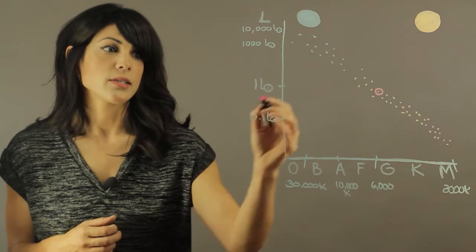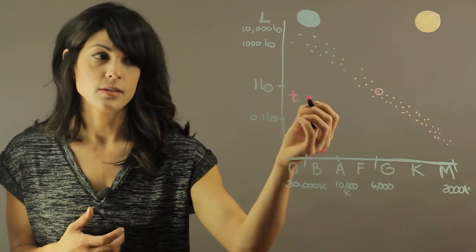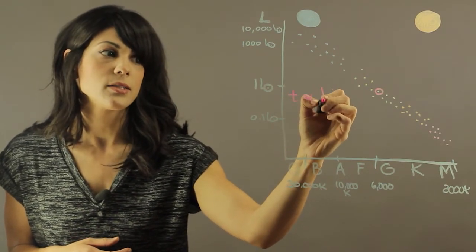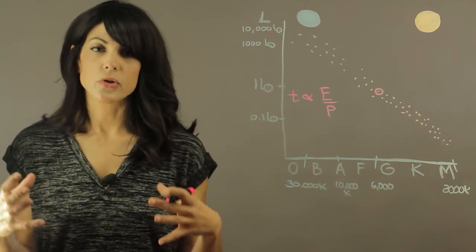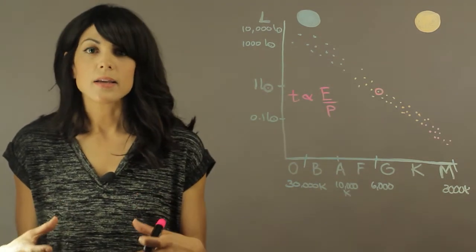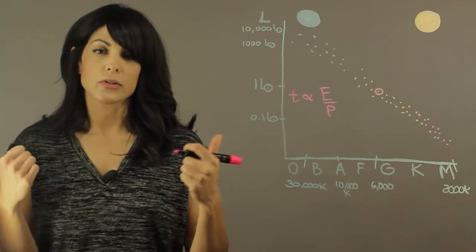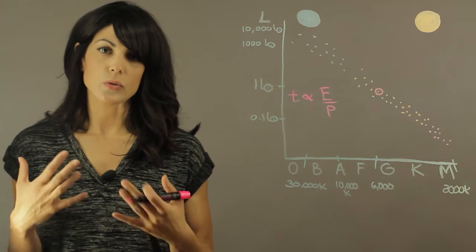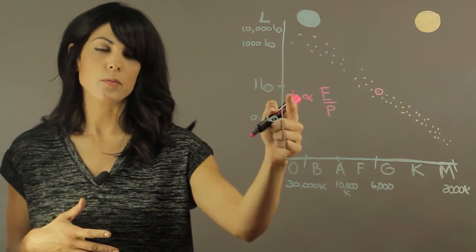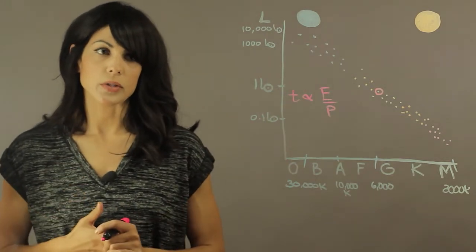So a good way to look at this is that the life expectancy should go as the energy divided by the power, right? So you have a certain, a finite amount of energy and you're outputting a certain amount of power, the power is how fast you are consuming that energy, right? So the time will be when you have consumed all the energy.